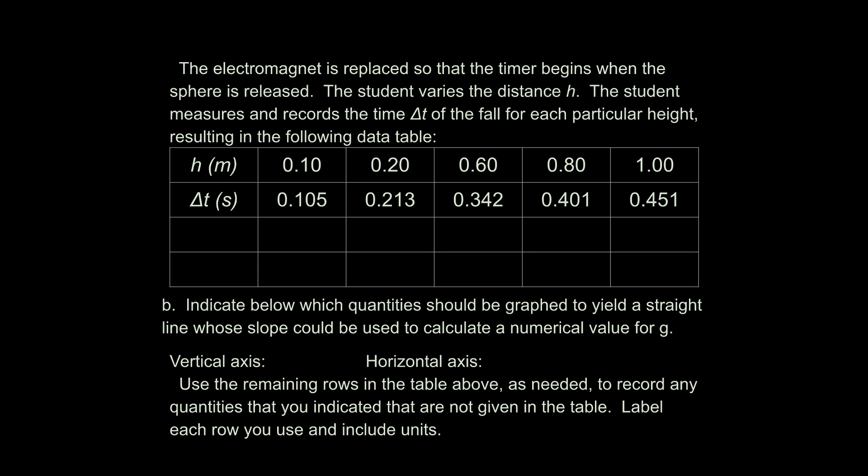The problem says the electromagnet is replaced so the timer begins when the sphere is released. So they've taken care of the problem they mentioned before. The student varies the distance H. The student measures and records the time delta T of the fall for each particular height resulting in the following data table. So they give you a data table here that you can fill out the rest of the data. And it says for part B, indicate below which quantity should be graphed to yield a straight line whose slope could be used to calculate a numerical value for g.